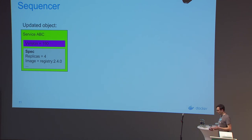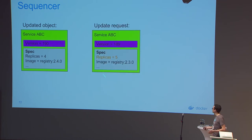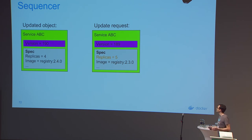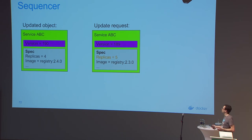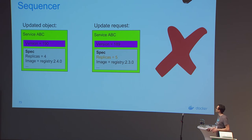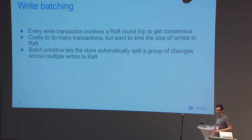If someone comes in with a request based on an old version — trying to change the number of replicas but with the old image — the sequencer rejects it because their version field shows it was based on the old version. You have to have the latest base version to make any updates.